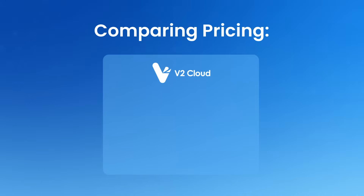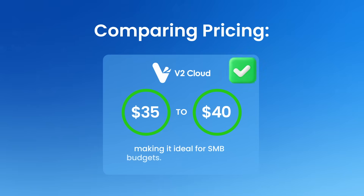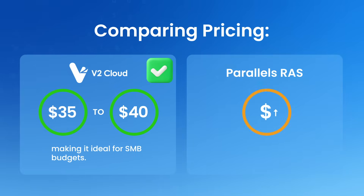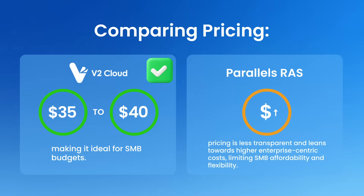Comparing pricing: V2 Cloud's transparent all-in pricing starts at just $35 to $40 per user per month, making it ideal for SMB budgets. Parallels RAS's pricing is less transparent and leans towards higher enterprise-centric costs, limiting SMB affordability and flexibility.